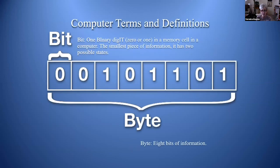A bit is one binary digit — zero or one — stored in a memory cell in a computer. It is the smallest piece of information and has two possible states: zero or one, on or off.